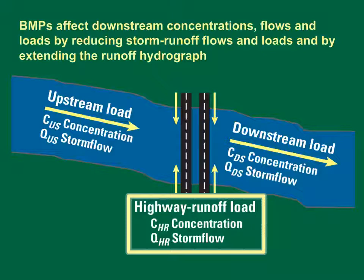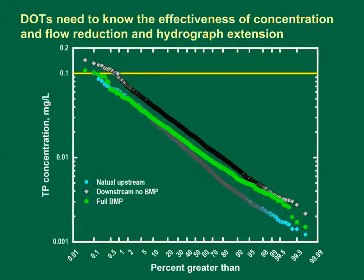BMPs can improve water quality when they reduce the highway runoff contributions. BMPs also can reduce the downstream concentrations by extending the highway runoff discharge hydrograph over a long period of time to allow for more dilution of BMP discharge flows. Decision makers for DOTs, municipalities, and regulatory agencies need to know the effectiveness of concentration and flow reduction and hydrograph extension for reducing adverse effects of runoff on receiving water quality.